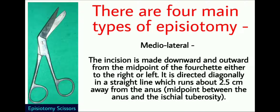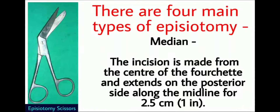In Mediolateral Episiotomy, the incision is made downward and outward from the midpoint of the fourchette, either to the right or left. It is directed diagonally in a straight line which runs about 2.5 cm away from the anus, i.e., midpoint between the anus and the ischial tuberosity. In Median Episiotomy, the incision is made from the center of the fourchette and extends on the posterior side along the midline for 2.5 cm.